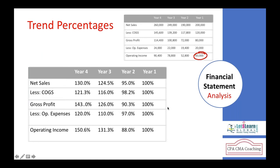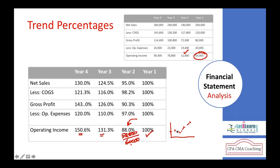When you calculate the trend percentage for operating income: first year, 60,000 over 60,000 times 100 = 100%. Second year: 52,800 divided by 60,000 times 100 = 88% — so operating profit decreased in year two. Third year it increased to 131%, and fourth year it increased to 150%. If you express this in a graph: year one is 100%, year two drops to 88%, year three picks up to 131%, year four picks up to 150% — showing the operating profit trend line.